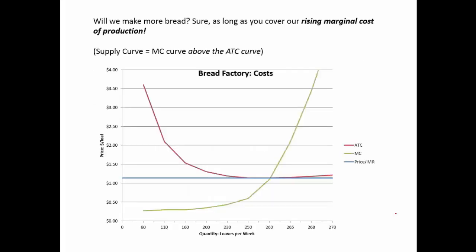If all of that flew past you, just remember that the supply curve slopes up. We actually calculate the results from the bread factory with some assumptions about the cost of the workers and the cost of the ingredients, and then we come up with some actual data. We graph out the cost curves and then the price line.